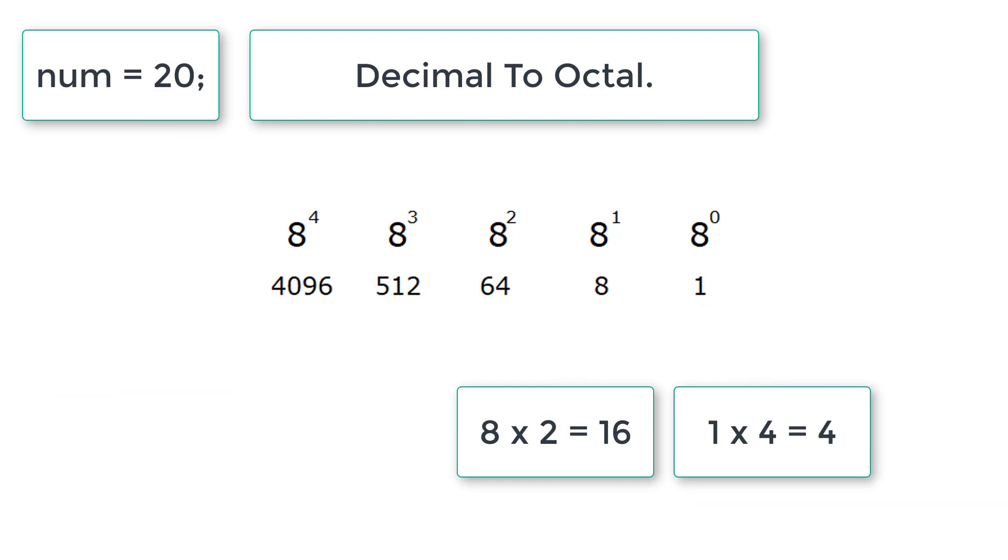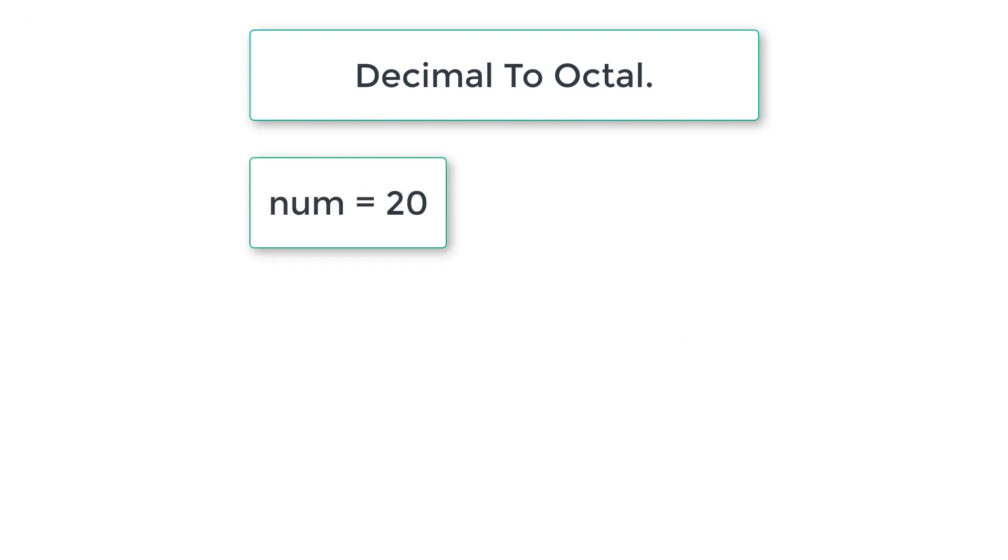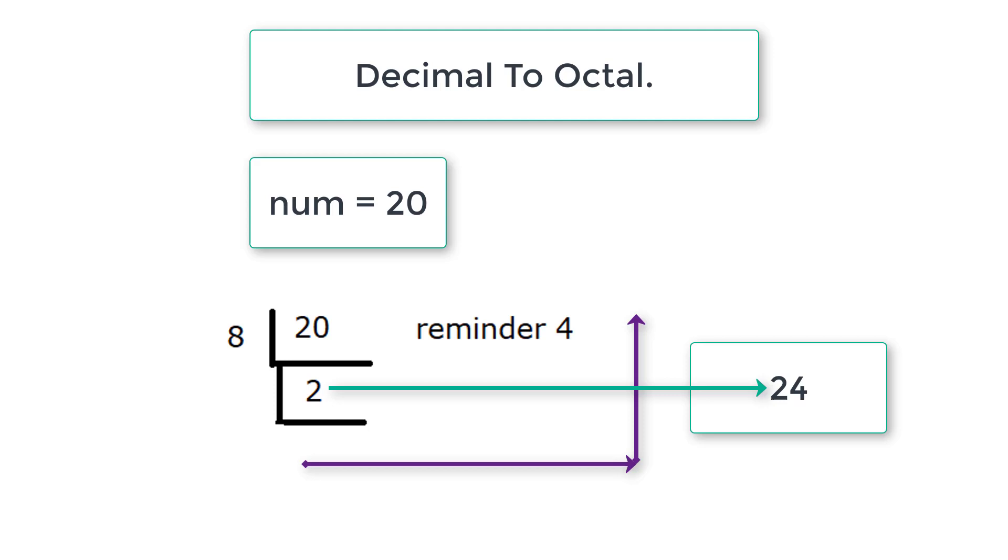So this indicates 2 times 8, 1 times 4 equals decimal number 20. So in octal it's 24. Another method is let's divide 20 by 8. 2 times 8 is 16, remainder is 4. So 2 and 4 we need to write like this. So octal representation of decimal number 20 is 24.